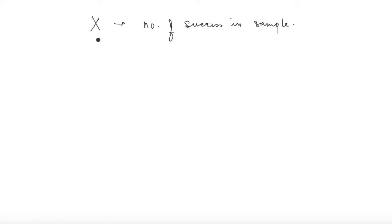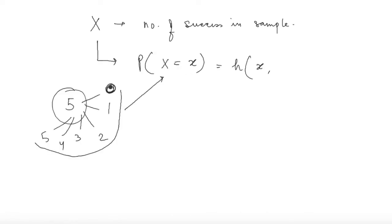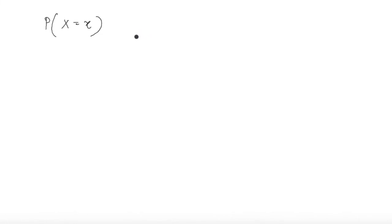This x depends on several parameters. It will be dependent on n, the number of individuals in the sample; capital N, the number of individuals in the population; and an important parameter capital M which depicts the number of successes in the population. We can derive the probability mass function of the random variable X. First, the denominator: selecting from a population of N individuals.